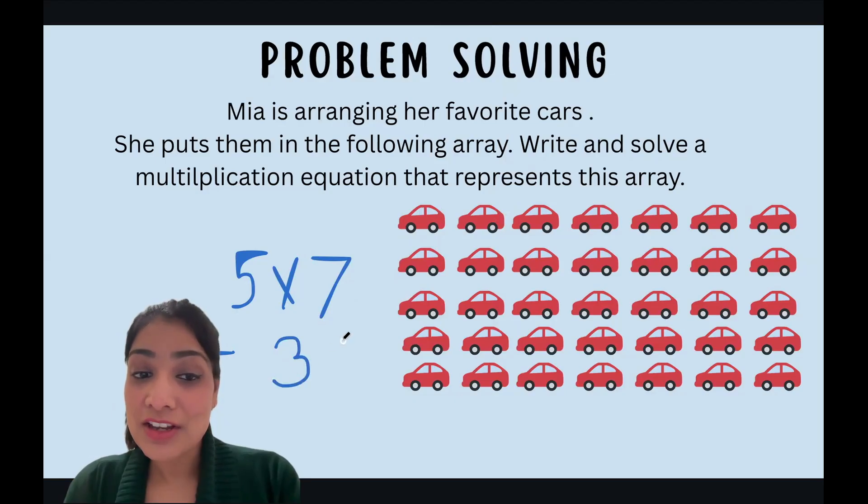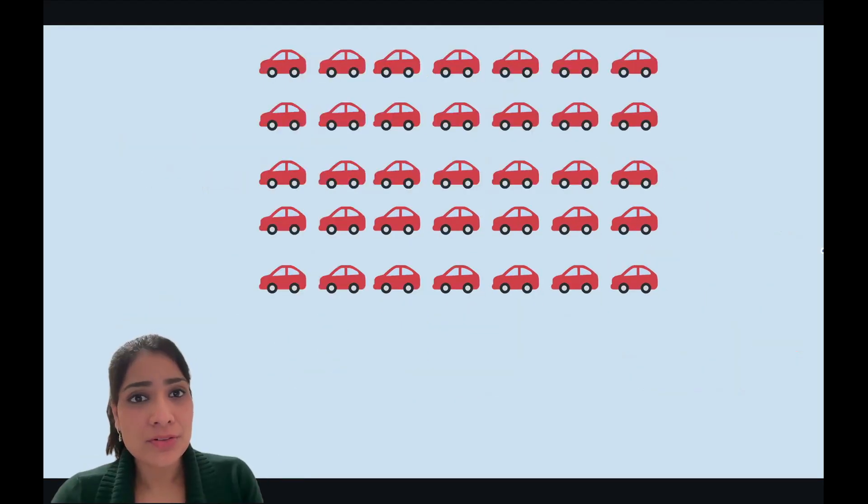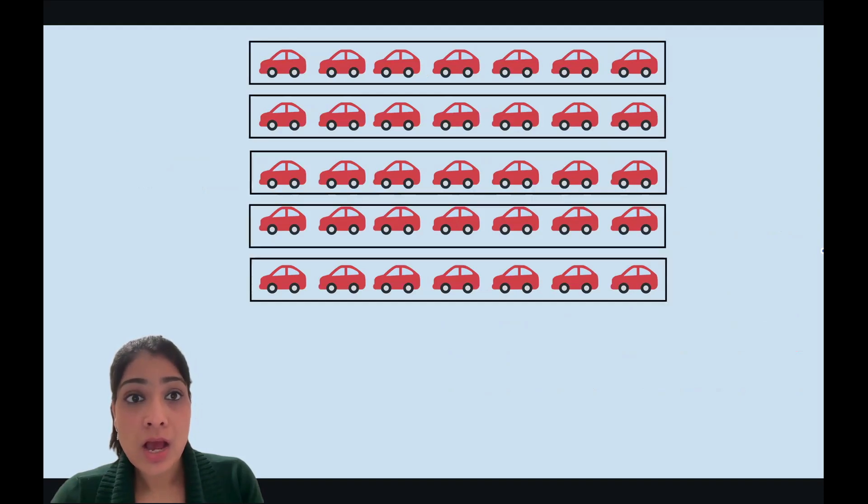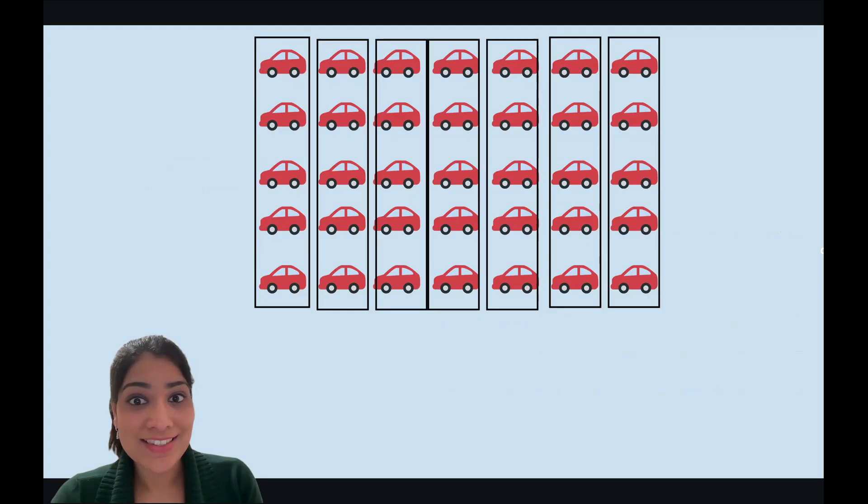Good job guys. I've been wondering that we've always been grouping our arrays along the rows like this, and we calculate them as five groups of seven or five times seven. But what if I group them instead like this? Will the total number of cars stay the same? Can I group them like this? Will seven groups of five and seven times five be same as when I do it along the rows?